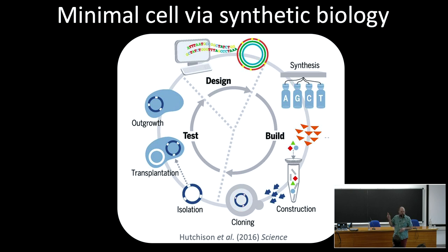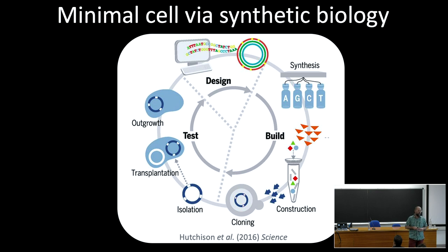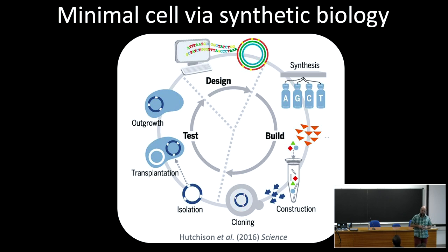The motivation for having a minimal cell was that it would be the equivalent of a hydrogen atom for cell biology: what are the bare minimal elements and components needed for a self-sustaining autonomous form of life? They started to build a candidate list of species for constructing a minimal cell back in the 1980s. One group of bacteria that showed up on this list as a potentially good organism to start with were bacteria called mycoplasmas.